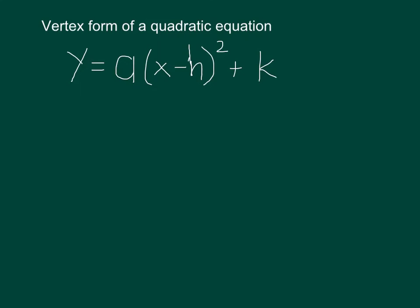This is the general vertex form of a quadratic equation. Just looking at it tells us important things about the quadratic equation. Crucially, it tells us the vertex. In this case, it would be (h,k).